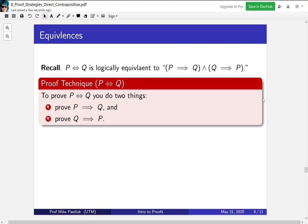Since this is logically equivalent, this tells us how to prove this type of statement. If you want to prove P if and only if Q, you need to do two things. You need to prove P implies Q, and you need to prove Q implies P. So you'll have typically two separate proofs.